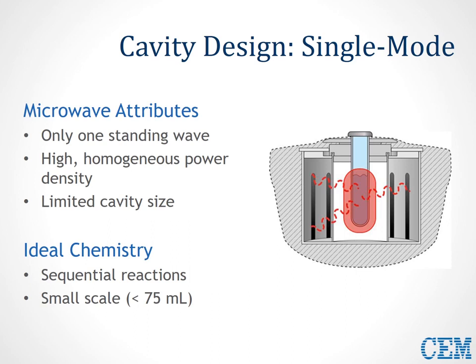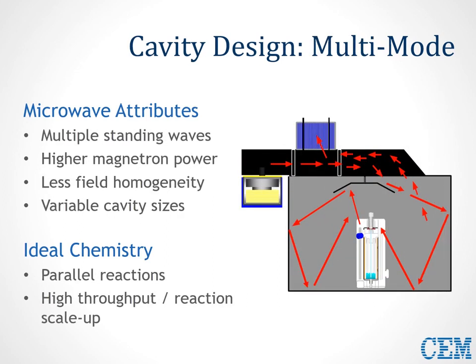There are a couple of different types of scientific microwaves available. The single-mode microwave is designed to allow one standing microwave inside the cavity, creating a high homogenous power density. It limits your sample size based on cavity size and is ideal for sequential reactions at smaller scales — about less than 75 milliliters. Multi-mode microwaves are a lot like your standard home microwave. These have variable cavity sizes and allow multiple standing waves inside the cavity with higher magnetron powers, but less field homogeneity — meaning potential for hot and cold spots, which you address through stirring and rotating the sample. Multi-mode microwaves are ideal for parallel reactions and scale-up reactions.